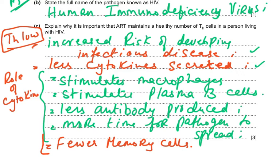When helper T lymphocytes are activated they produce cytokines, so fewer helper T lymphocytes means less cytokine secreted. Cytokines stimulate macrophages, so fewer cytokines means less macrophage stimulation, less stimulation of plasma B cells, less antibodies produced, more time for the pathogen to spread, and fewer memory cells produced. This is why ART is important — to keep helper T lymphocyte numbers normal.